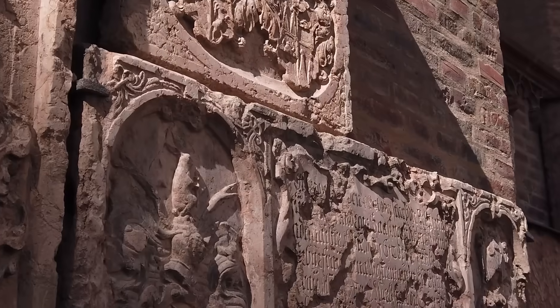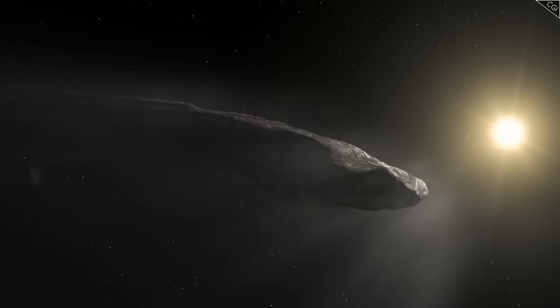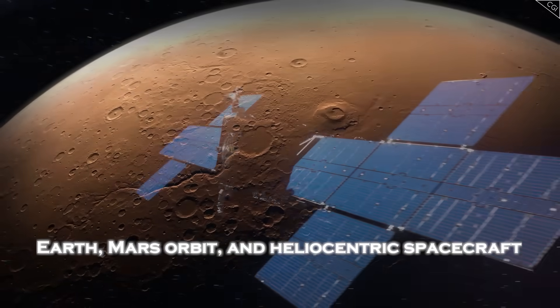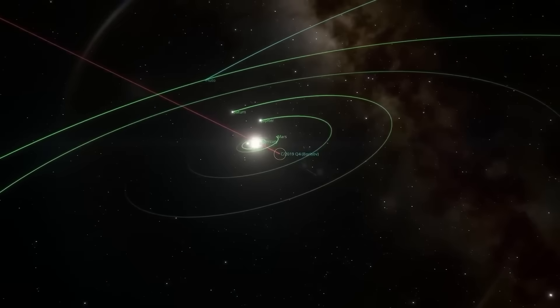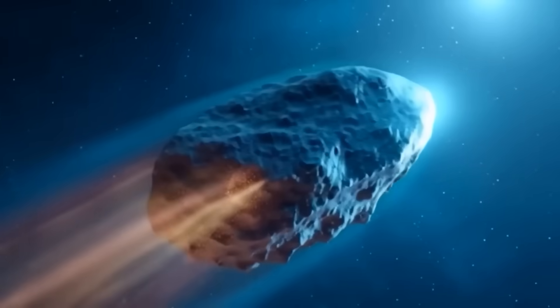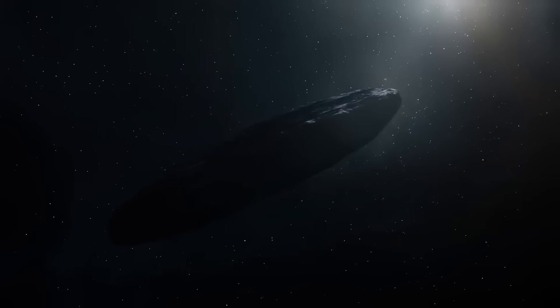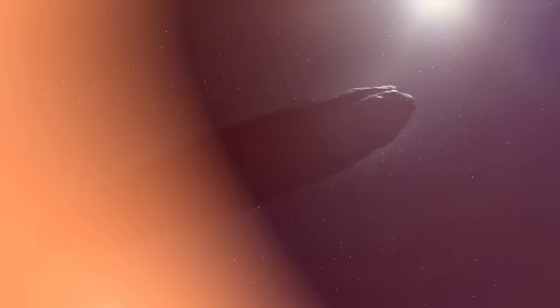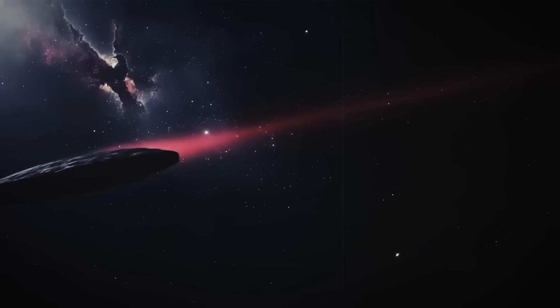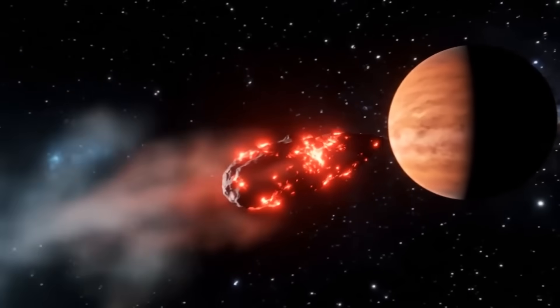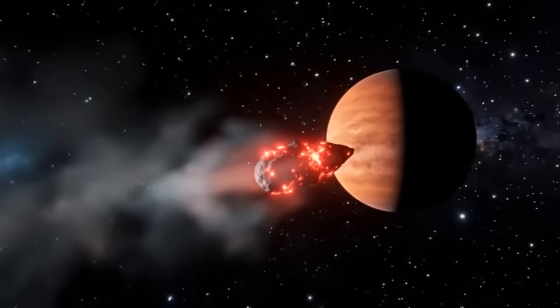For the first time in human history, we now have observational data of an interstellar object captured from Earth, Mars orbit, and heliocentric spacecraft. This triangulation gives us something unprecedented. True three-dimensional validation. The green tone? Confirmed. The coherence of the nucleus? Confirmed. The intensity of the jets? Confirmed. The sunward plume? Confirmed. The stability of the object despite violent emissions? Confirmed.